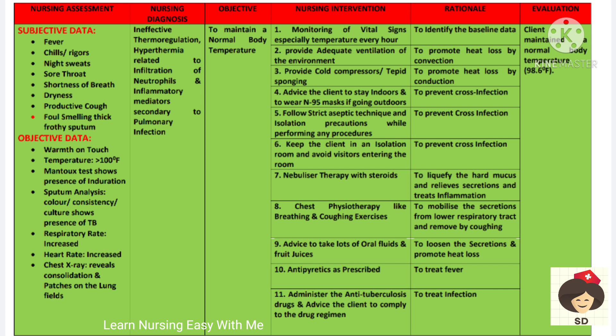You have to maintain normal body temperature and monitor vital signs, especially temperature. Adequate ventilation should be provided. Cold compress and tepid sponging should be given to decrease temperature. Advise the client to stay indoors and wear an N95 mask to prevent cross infection. Follow strict isolation technique, keep the patient in an isolation room, and avoid visitors entering the room. Nebulizer therapy and chest physiotherapy will relieve and mobilize secretions. Tell the patient to take lots of oral fluids and fruit juices to help decrease temperature. Antipyretics can be administered to treat fever, and all anti-tuberculosis drugs should be administered.